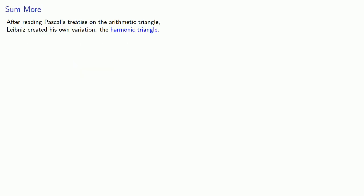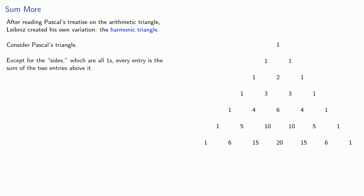After reading Pascal's treatise on the arithmetic triangle, Leibniz created his own variation known as the harmonic triangle. So let's consider Pascal's triangle. Except for the sides, which are all 1's, every entry is the sum of the two entries above it. So for example, this 10 is the sum of 4 and 6.